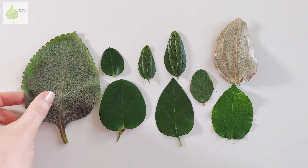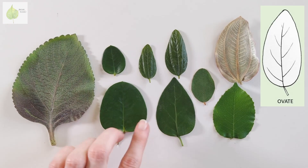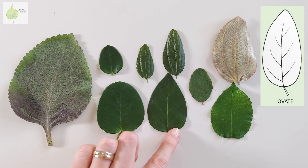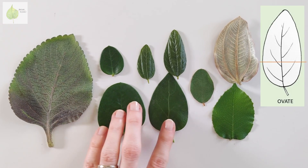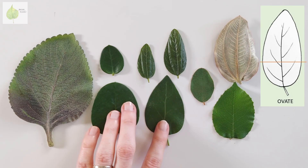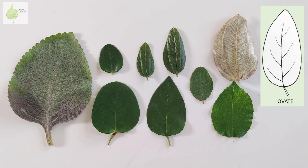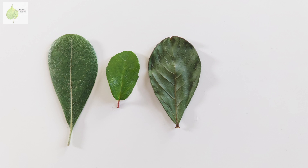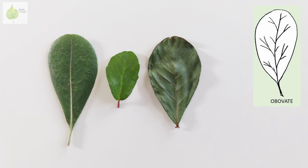Then we have ovate leaves — as the name suggests, they come in the shape of an egg, with the widest point below the middle. And again, if we invert the ovate leaf, similarly to what we did with the lanceolate leaf shape, we get an obovate leaf.